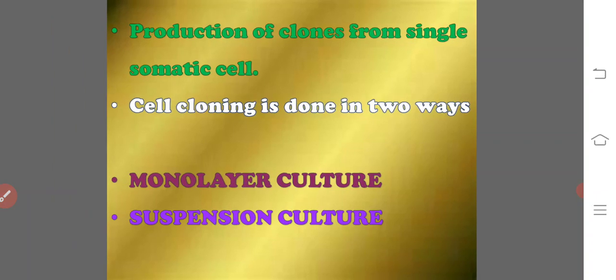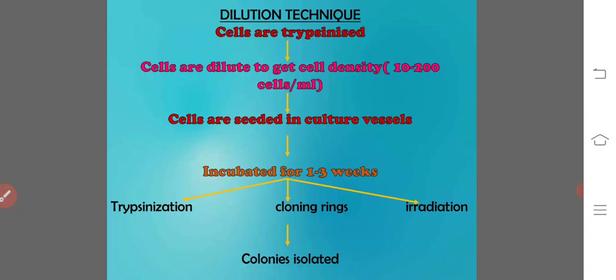Cell cloning is done in two ways: monolayer culture and suspension culture. In monolayer culture, the vessels used are petri dishes, multi-well plates, or flasks. Individual colonies of cells can be easily removed from the surface where they are attached. In suspension culture, cloning can be executed in suspension by seeding cells into viscous solution or gels, and individual colonies of daughter cells formed in suspension remain intact.